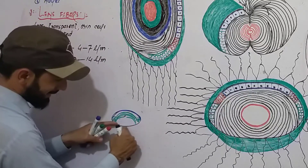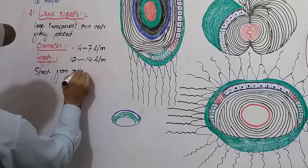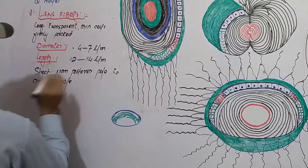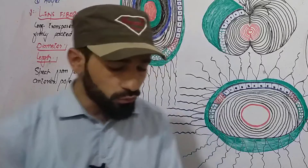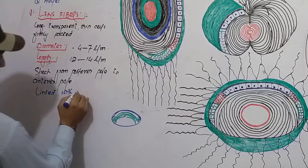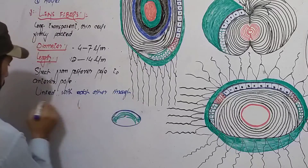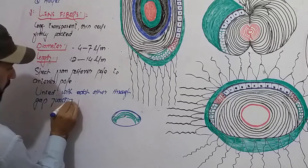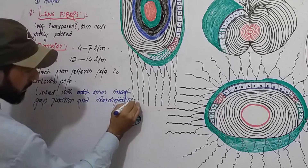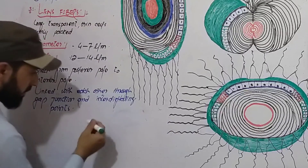These fibers stretch from the posterior pole to the anterior pole. They are linked with each other through gap junctions and interdigitating processes.